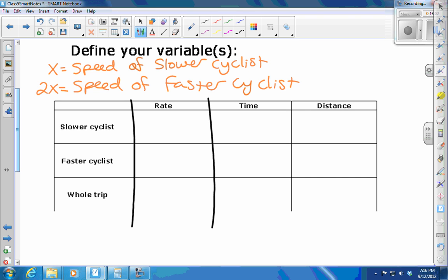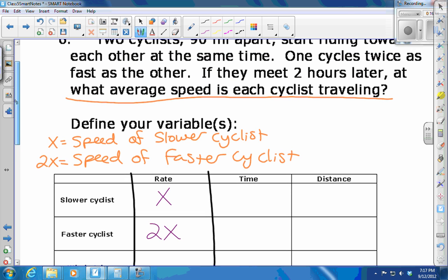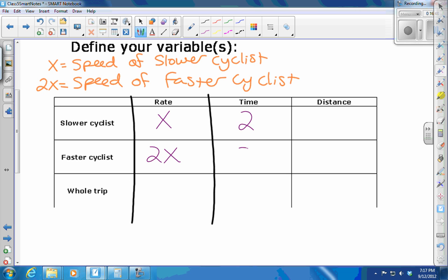We've defined some variable expressions. We have rate times time equals distance as our model here. So instead of whole, percent, part, we have rate, time, distance. My rate of the slower cyclist, we called that x. The faster cyclist, 2x. I'm not sure about the whole trip. They're moving at each other, so we'll leave that blank for now. For time, I don't know that either. But what do I know about distance? They told you they were riding for two hours. They meet two hours later. They ride for two hours. They both ride for two hours.